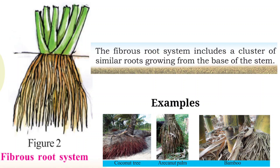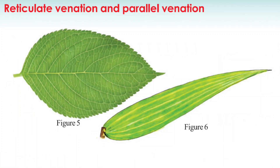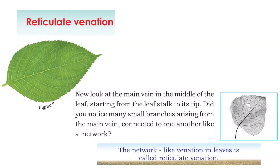Next we are studying about venation. Venation is the arrangement of veins in a leaf. There are two types of venation. Let's start with the first type.